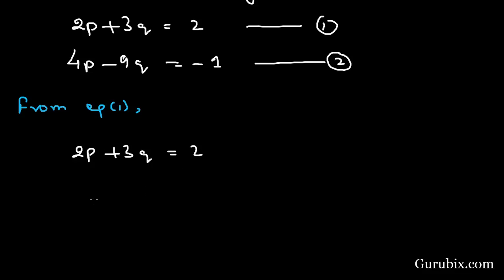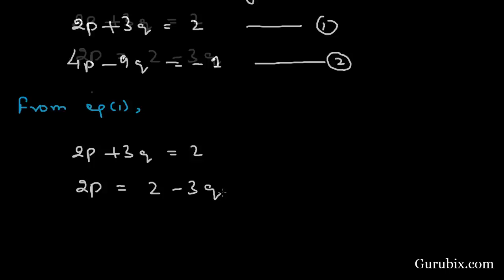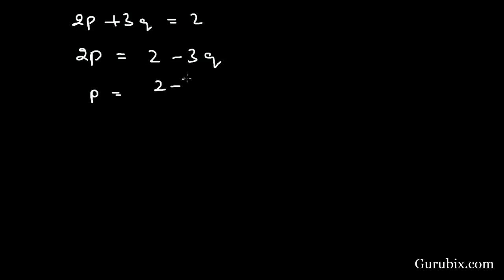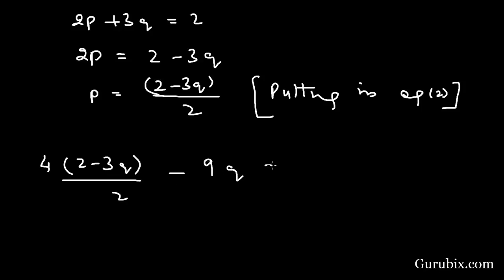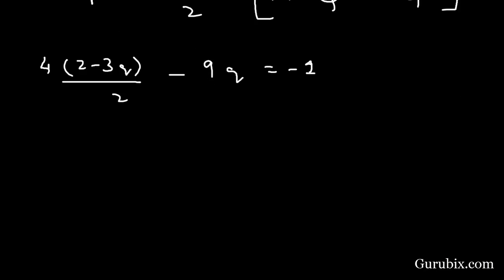Now we shall write the value of P in terms of Q. Then 2P = 2 - 3Q, so P = (2 - 3Q) / 2. Now we shall substitute this value into equation number 2. Putting it in equation number 2, we have 4 × (2 - 3Q)/2 - 9Q = -1. We can cancel the 2 with the 4.